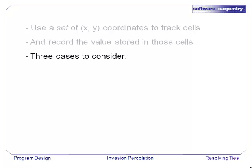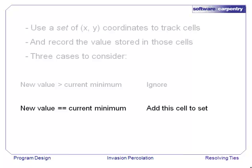There will be three cases to consider every time we look at a new cell. Case 1, its value is greater than the minimum we've seen so far, in which case we can ignore it because we know there are better cells elsewhere. Case 2, the value of the new cell is equal to the current minimum. In this case, we add the new cell's xy coordinates to the set.